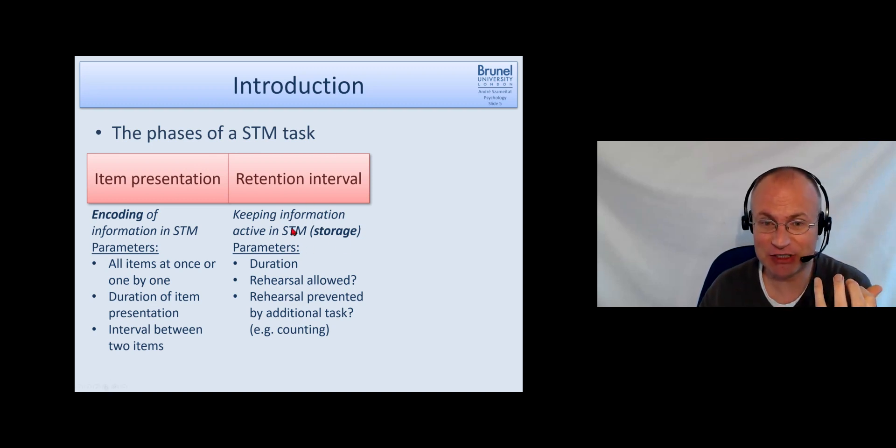And the parameters for this stage are, first of all, the duration. How long do I have to store? There are some short-term memory tasks where this explicit retention interval is kept to zero length, so you present something and ask for immediate recall. But you can also say, try to remember that for 30 seconds. The next question: Is rehearsal allowed? And if not, do we prevent rehearsal? What does rehearsal mean? Suppose I tell you, please remember a phone number: 1578. And then I tell you for 30 seconds. Then you probably do something like 1578, 1578 in your mind. That's rehearsal. We will see later which structures are used for that. Do you allow that rehearsal or not?